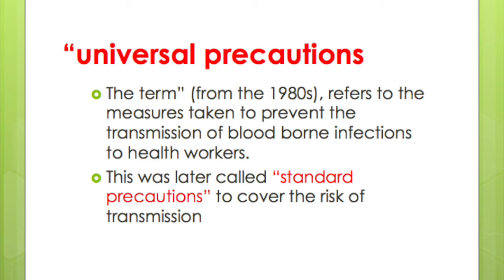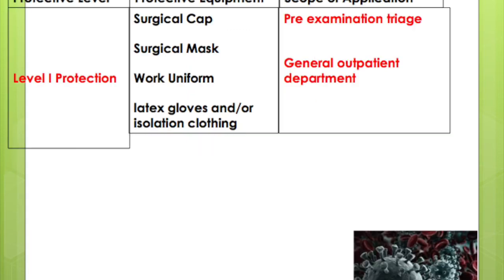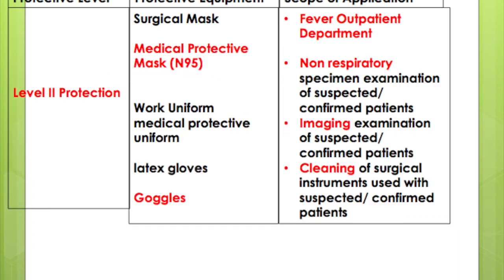Now it is called standard precautions. These are the personal protective equipment — PPE — in relation to COVID-19 infection management. There are three levels of protection. Level one protection requires a disposable surgical cap, mask, and uniform for pre-examination and triage. Level two, in addition to level one, uses N95 masks and goggles for fever outpatient, non-respiratory imaging, and cleaning duties.